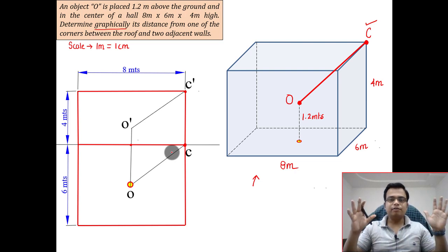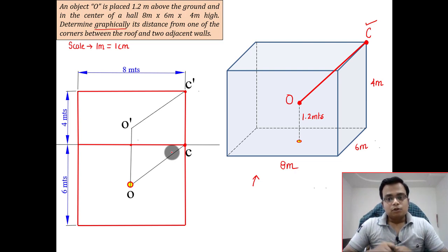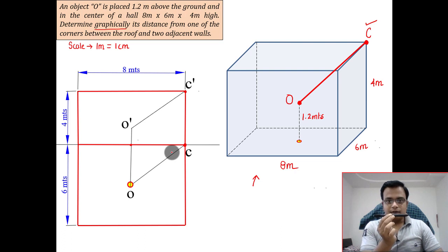What we are supposed to do is find the true distance, the true length between the object O and the corner C. Here is the deal: if you watch this carefully, I've kept it absolutely parallel to the vertical plane. You can consider my body as a VP or a vertical plane, and I have kept it absolutely parallel. Now you can see from the front and the true length is clearly visible. But if I incline it at a certain angle with the VP, you can no longer see its true length. So in order to see the true length, what you need to do is make it absolutely parallel to the VP, and then only you will be able to see its true length from the front.